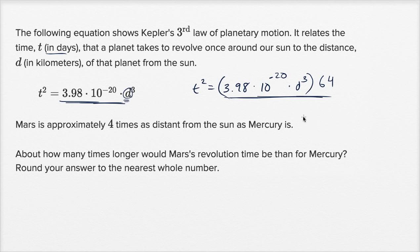But on the left-hand side, you have a t squared. So over here, you would get that t is equal to the principal root of all of this business right over here, the 3.98 times 10 to the negative 20 times d to the third. Here, you're going to get t is going to be equal to the principal root of 3.98 times 10 to the negative 20 times d to the third times,